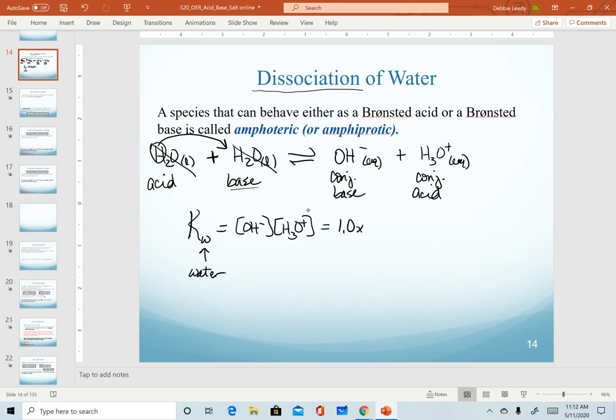This is a well-known constant. This is on your equation sheet of your periodic table. Again, equilibrium constants are temperature dependent. So at 25 degrees Celsius, our Kw expression is hydroxide times hydronium, and that is a value of 1.0 times 10 to the minus 14.